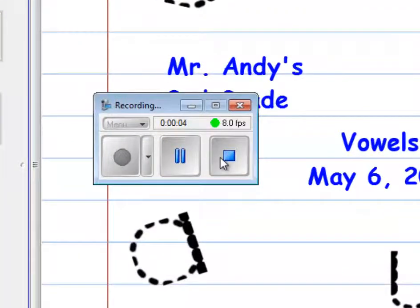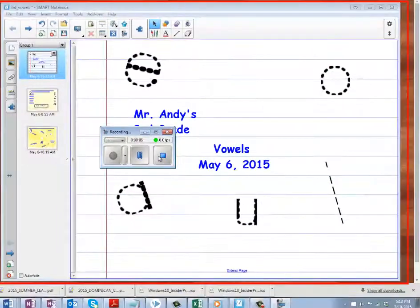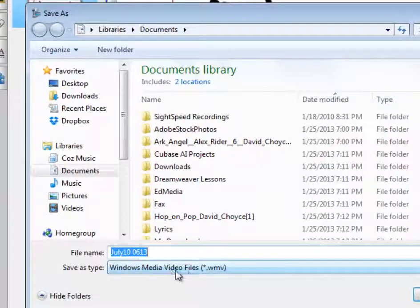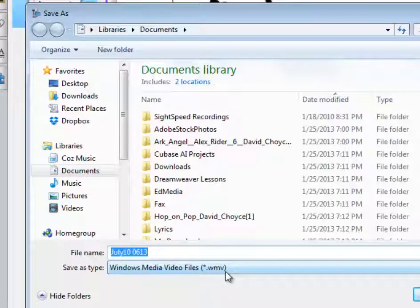And when you hit stop, it creates a regular file like a document-type file, but this is a video file. It does a WMV file, which is a Windows Media Video file. It says it right next to it.